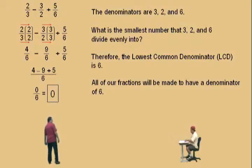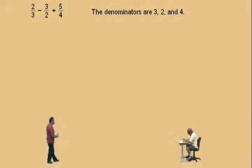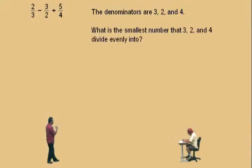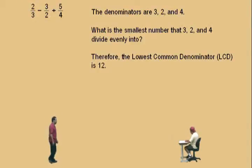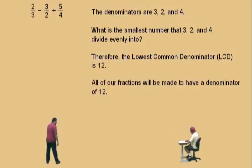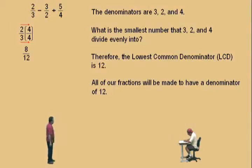Now here we have two-thirds subtract three-halves plus five-fourths. What are our denominators? Three, two, and four. What is the smallest number that three, two, and four divide evenly into? Twelve — our lowest common denominator is twelve, so all fractions will be written with a denominator of twelve. Two-thirds: what do I multiply three by to get twelve? Four. I must multiply the top by four — two times four is eight, and three times four is twelve. So two-thirds is eight-twelfths. Now three-halves: what do I multiply two by to get twelve? Six. Three times six is eighteen, and two times six is twelve — so three-halves is eighteen-twelfths.